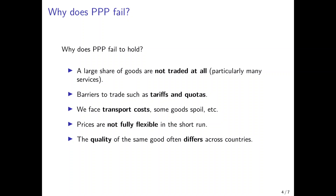Even for goods that can be traded, there are barriers to trade such as tariffs and quotas, which impede the free movement of goods. This can also lead to a situation where price differences across countries are sustainable.